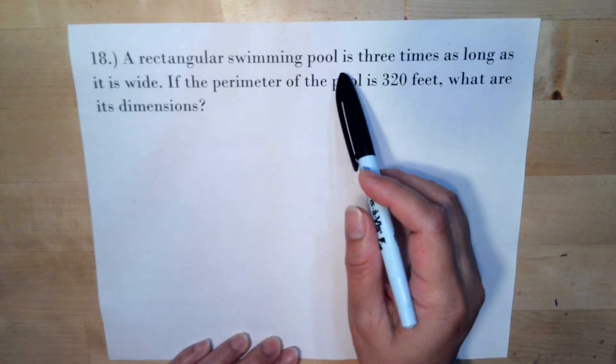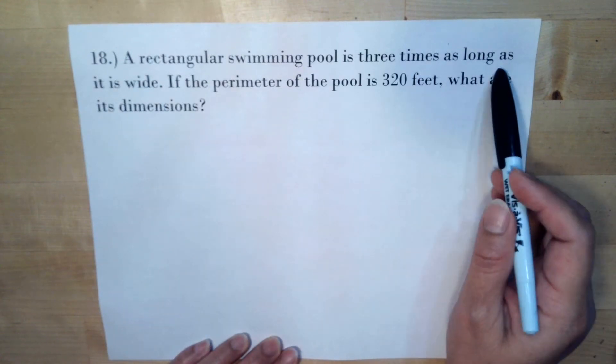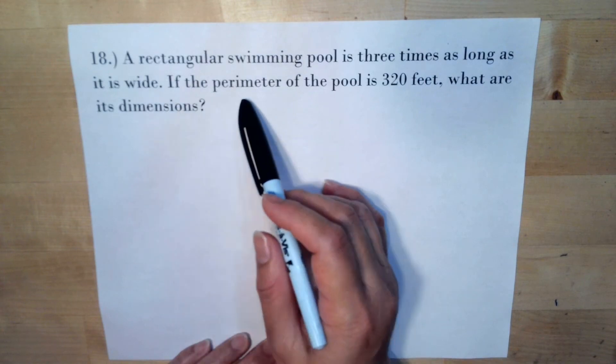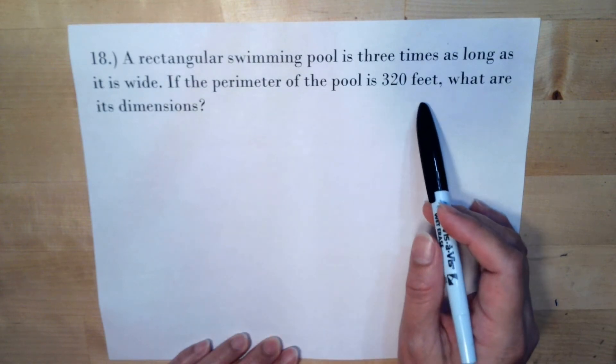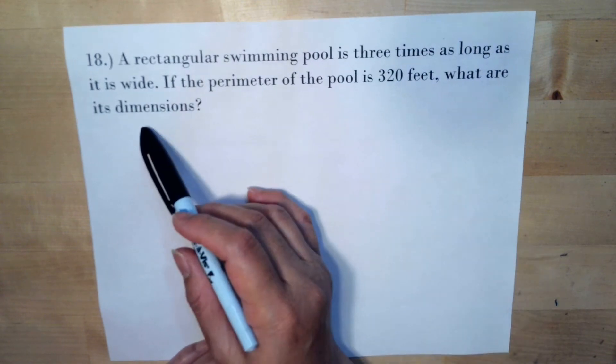A rectangular swimming pool is three times as long as it is wide. If the perimeter of the pool is 320 feet, what are its dimensions?